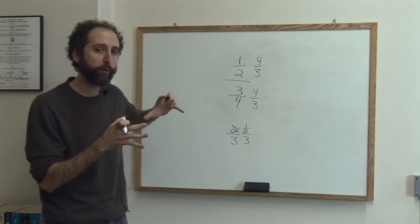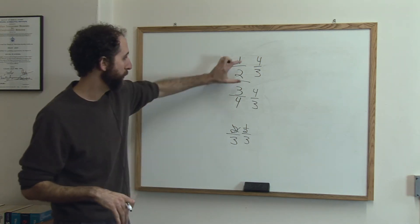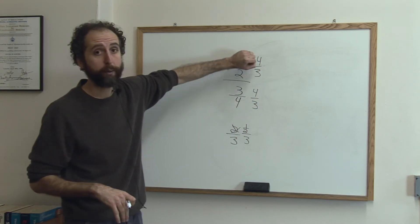In a fraction, to keep a fraction equivalent or equal, all you need to do, you need to multiply whatever you do to the bottom, you have to do to the top as well.